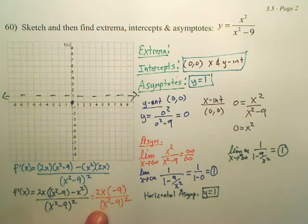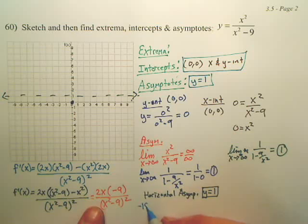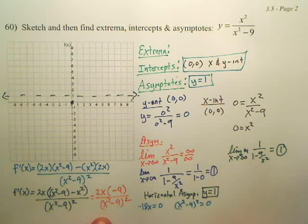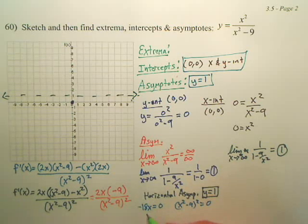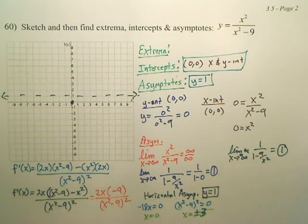So, if I set this equal to 0, if I set that equal to 0, don't you get, aren't you going to set negative 18x equal to 0, and x squared minus 9 squared equal to 0? So, here, you got x equals 0, here you have x equals plus or minus the square root of, plus or minus 3? Is that right?